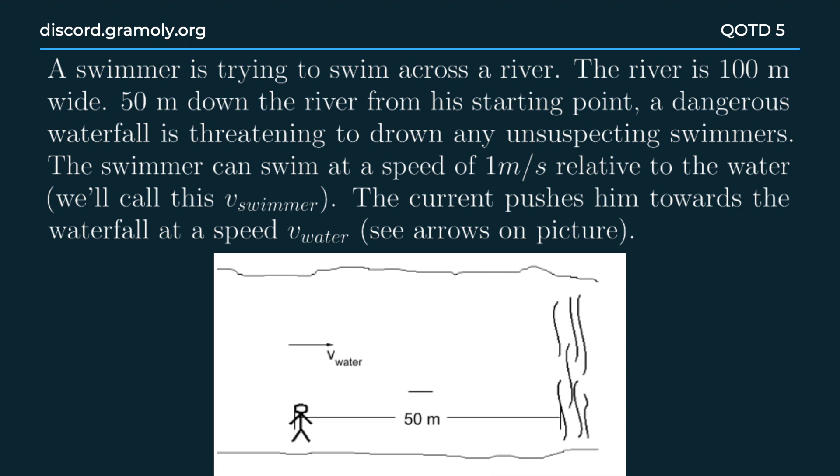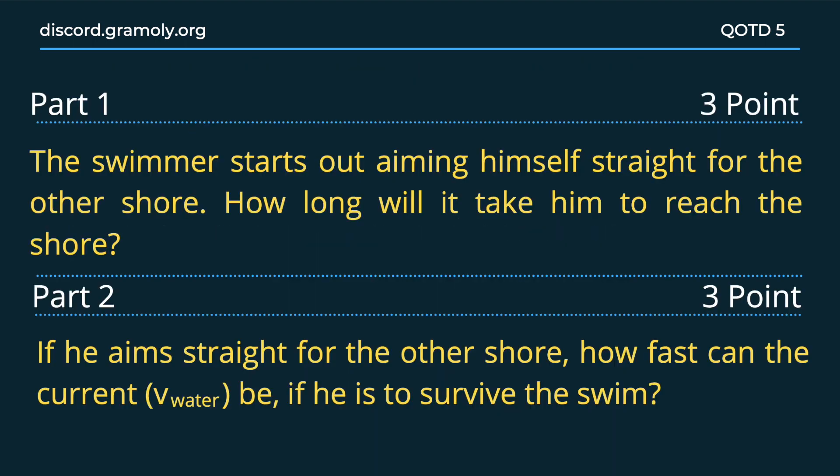Now moving on to the question. The question is divided into four subparts. The first part says: the swimmer starts out aiming himself straight for the other shore. How long will it take him to reach there?